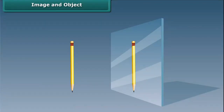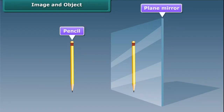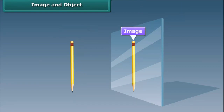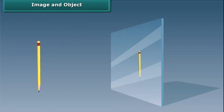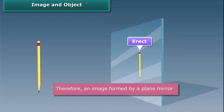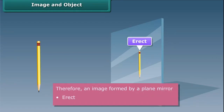Image and Object. Take a plane mirror and place a pencil in front of it. The pencil which appears behind the mirror is called an image and the pencil itself is called an object. If we place the pencil at different positions in front of the mirror, the image will remain behind the mirror. Such an image is called erect. Therefore, an image formed by a plane mirror is erect and of the same size as the object.